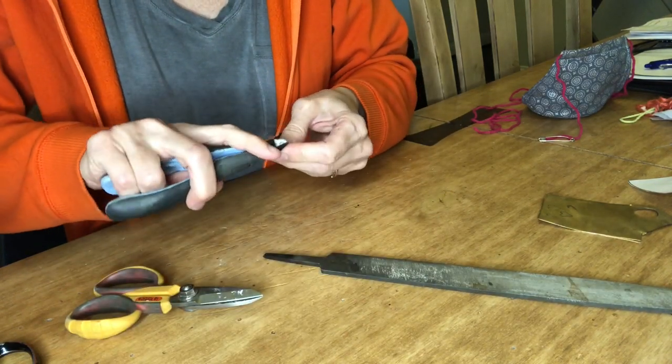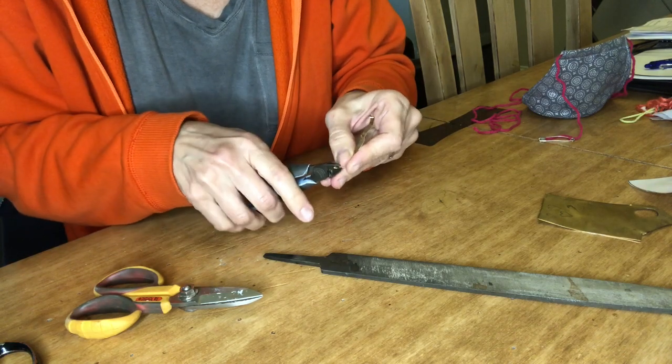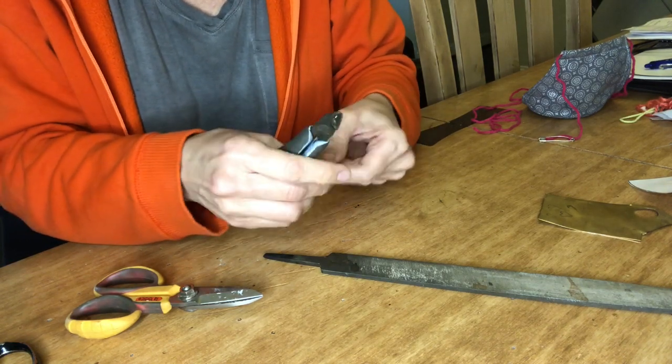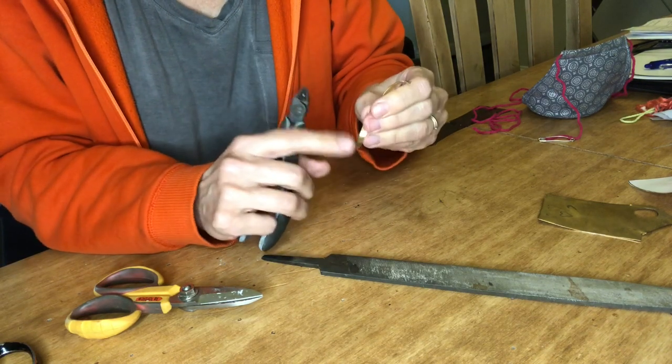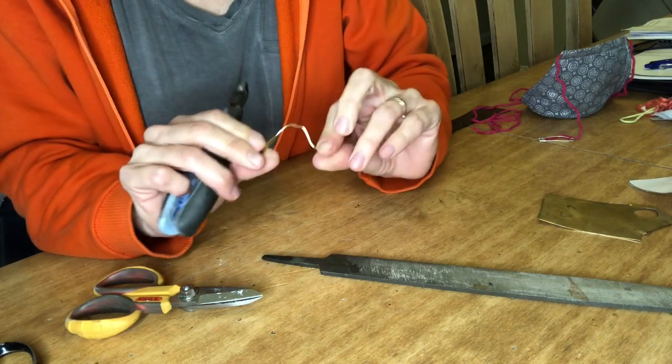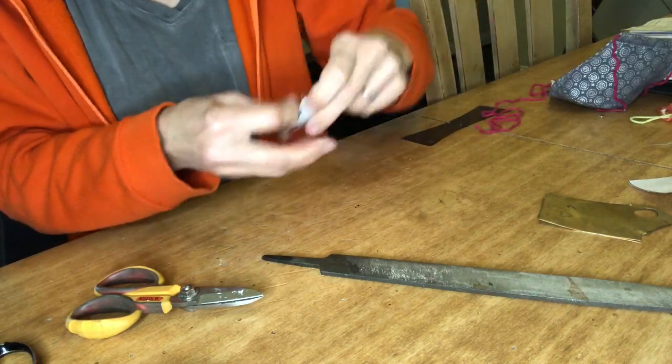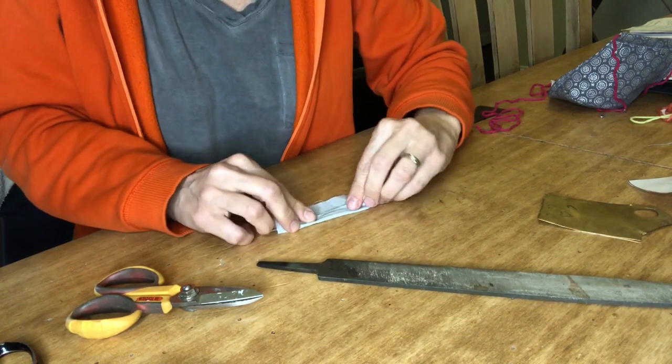Also, you want to cut off the pointy edges so that it doesn't cut right through the fabric, because metal is sharp. And the other thing I did was take hot glue and put it on the tips.